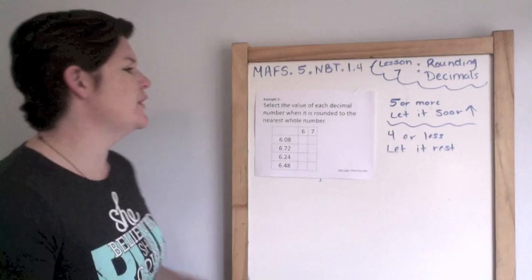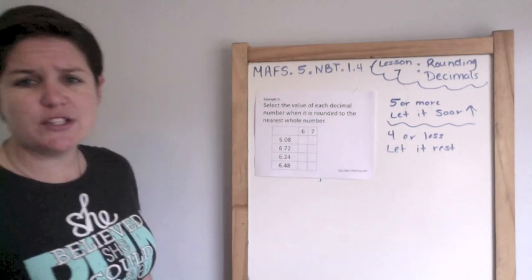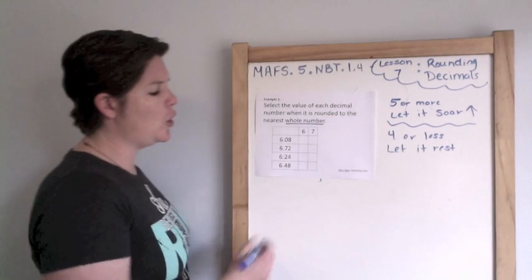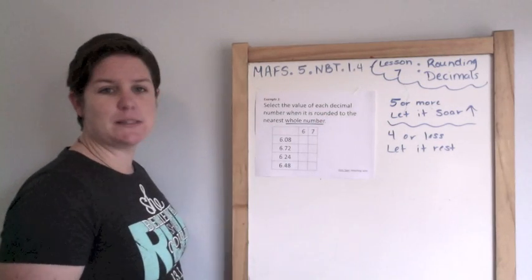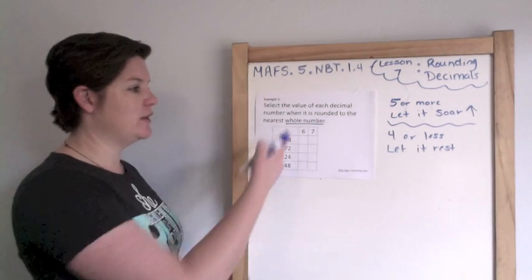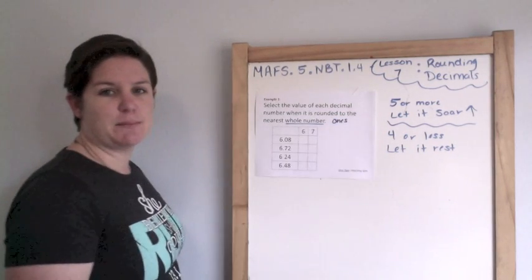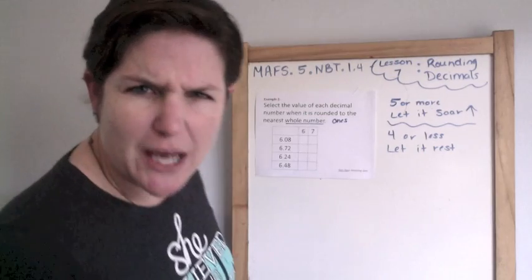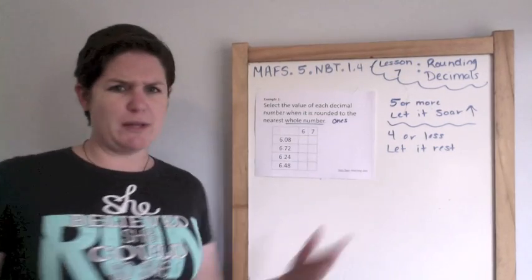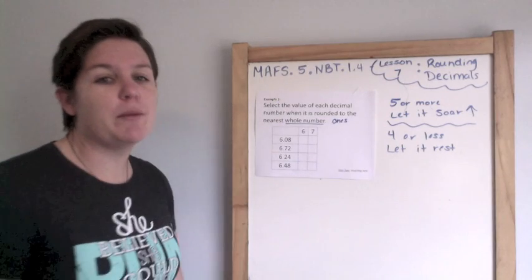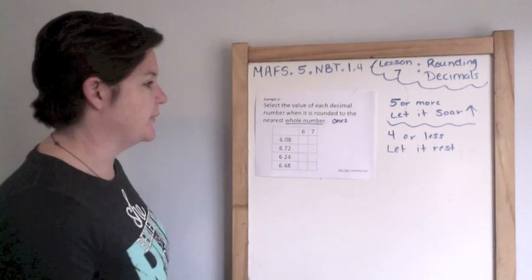Example two. Select the value of each decimal number when it is rounded to the nearest whole number. The whole number would be the one's place. I'll say that again. The whole number is the one's place. That's important for you to know. So many students get tripped up. They think, hmm, the whole number, which place is that? It's the one's place.